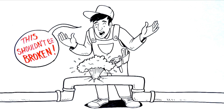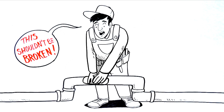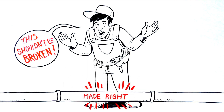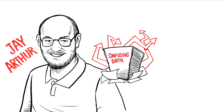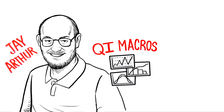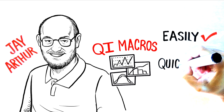You won't solve these problems with gut feel, common sense, or trial and error. But it can be made right — you can plug those leaks. Jay Arthur has created a very effective set of Excel spreadsheet tools called QI Macros that can help you fix issues in your business easily and quickly.